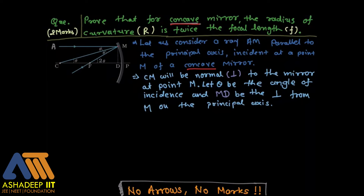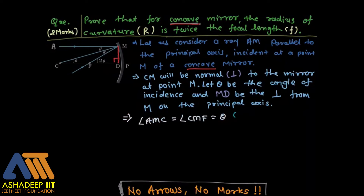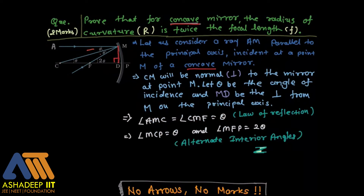At point M, CM is the normal and theta is the angle of incidence. MD is the perpendicular drawn from point M on the principal axis. Angle AMC and angle CMF are both equal to theta according to the laws of reflection, making angle MCF equal to 2 theta — the alternate interior angle.